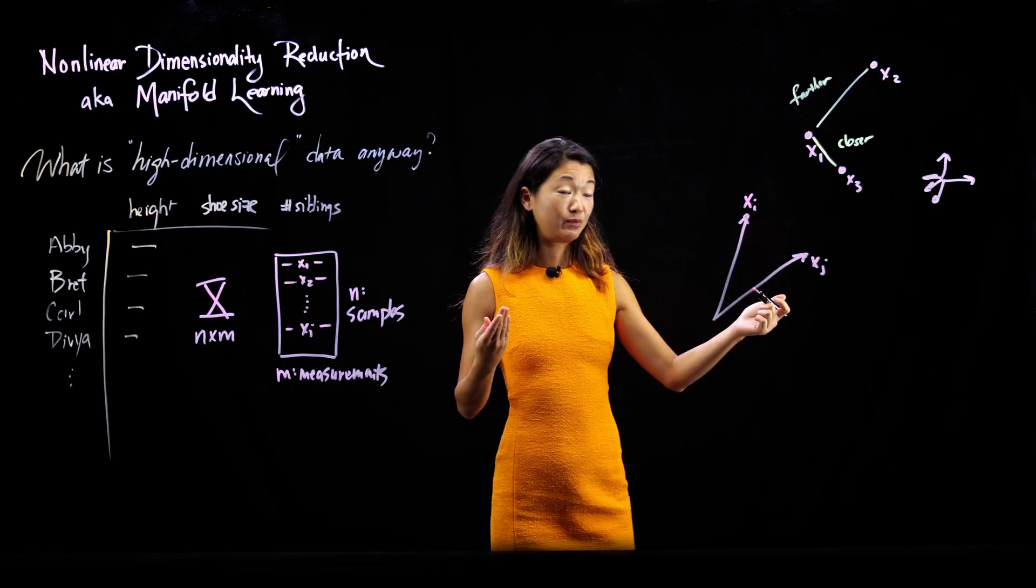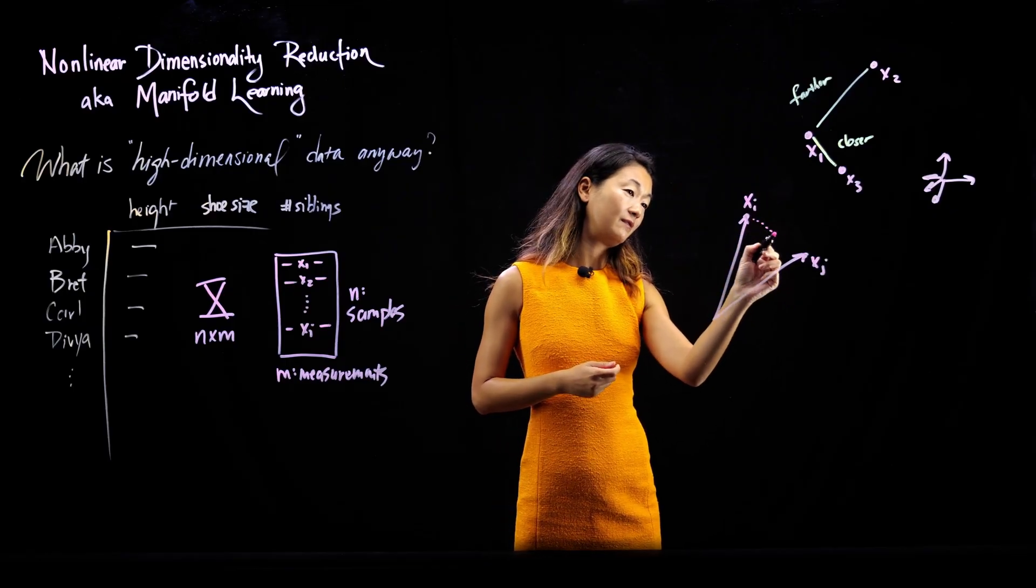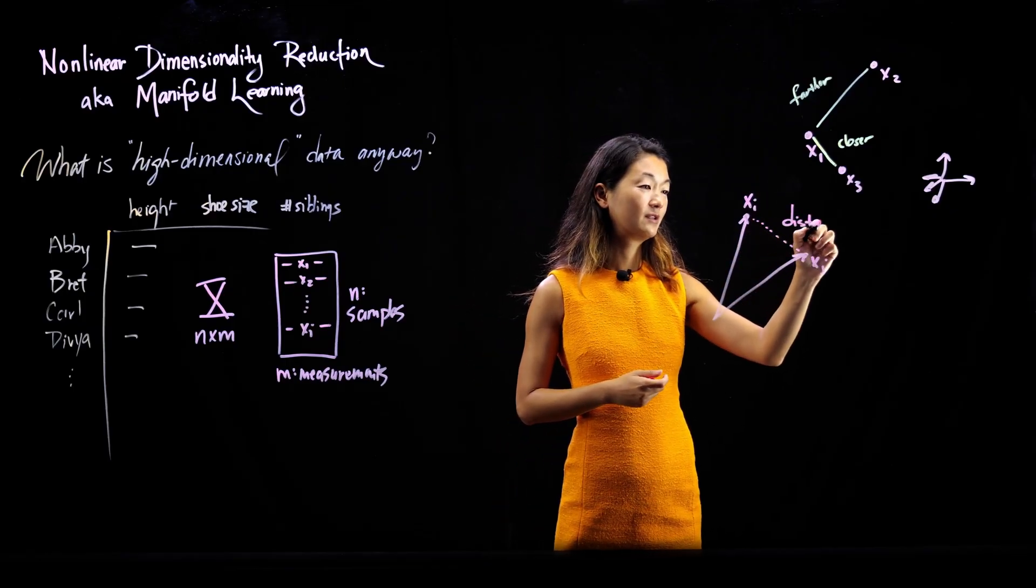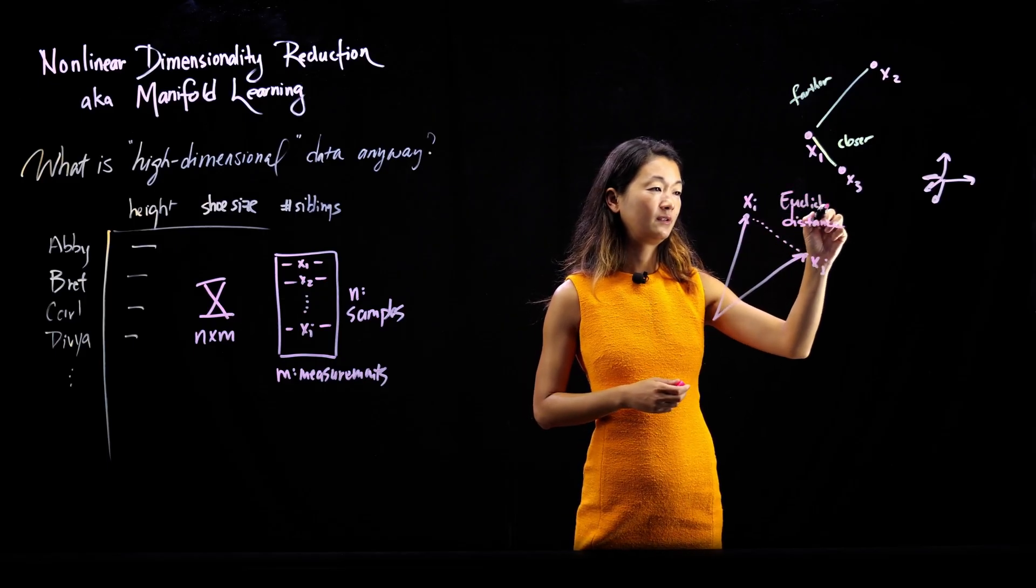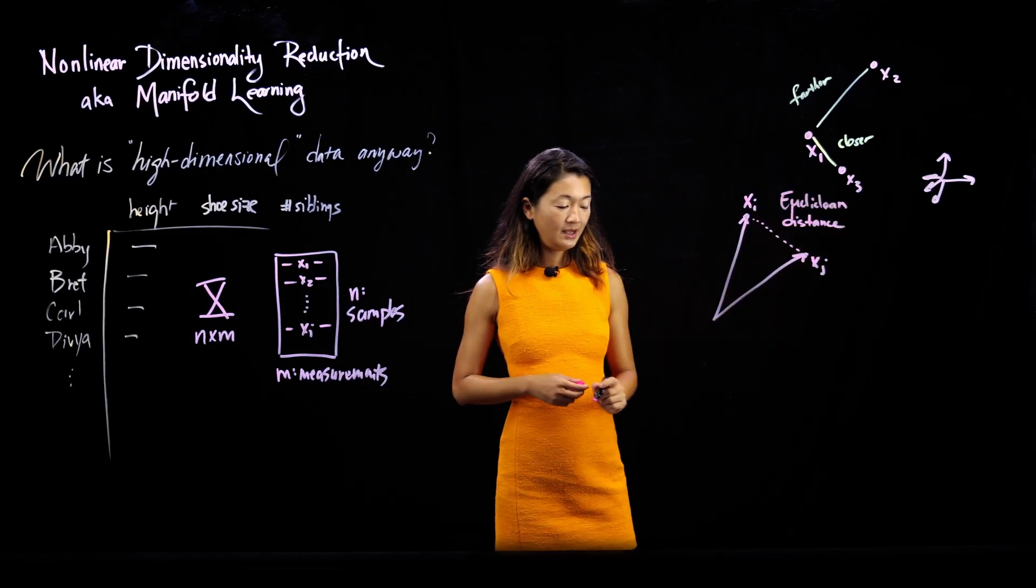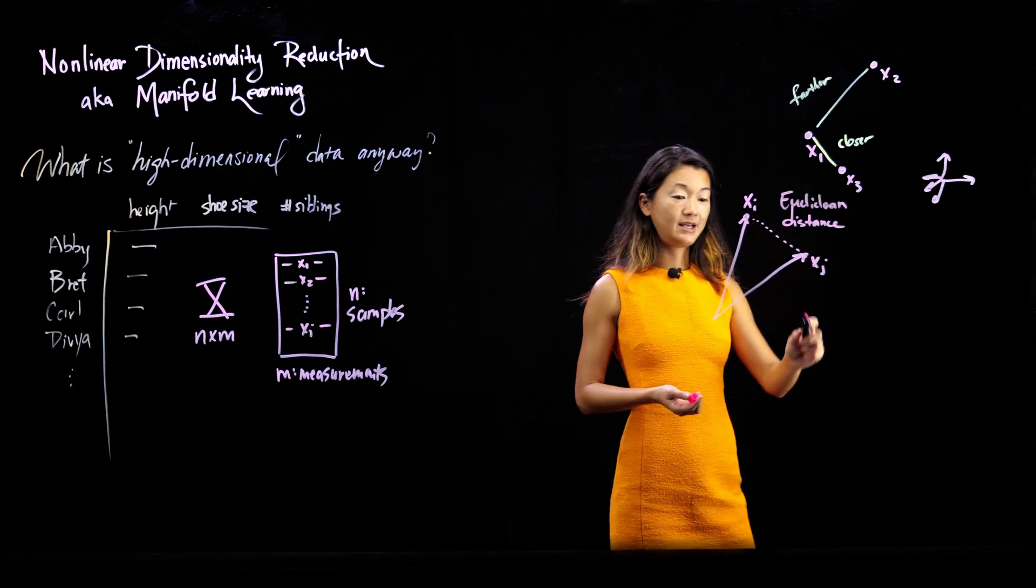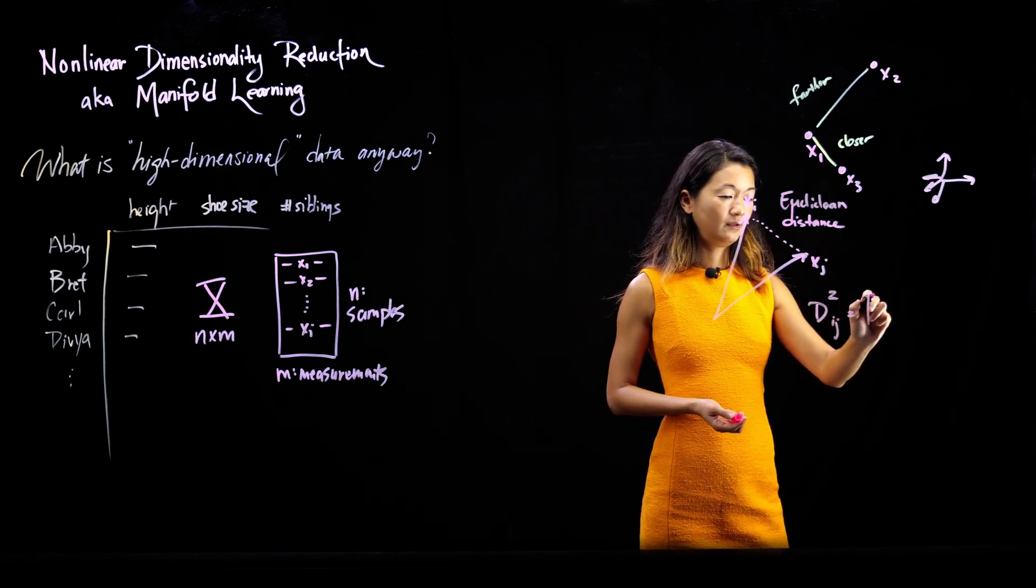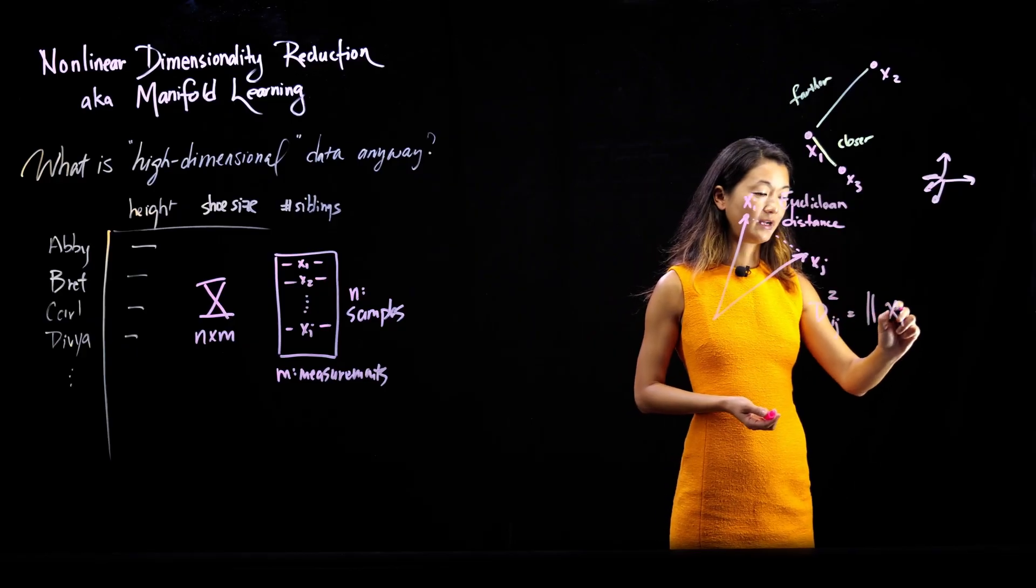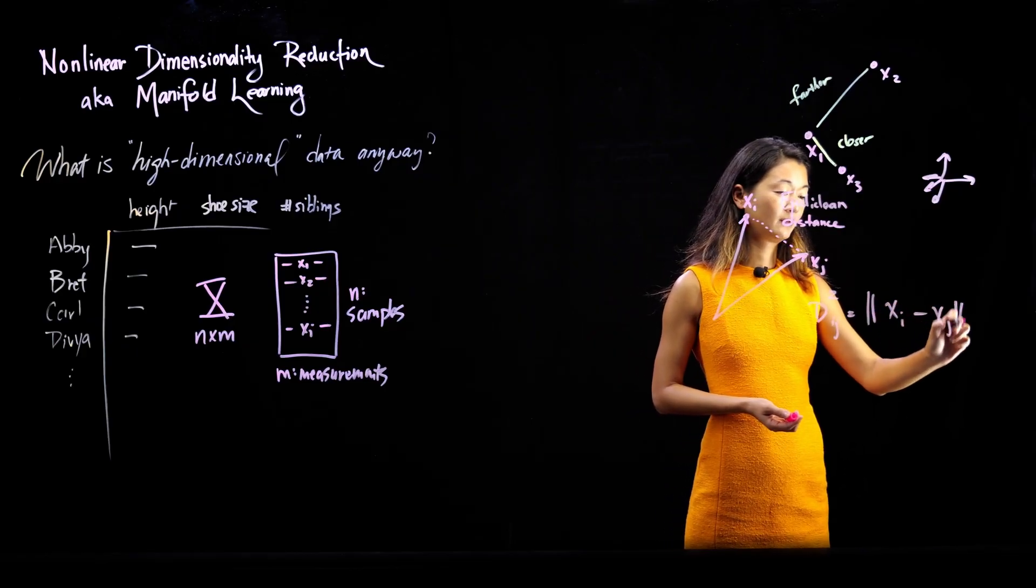And the distance between them is simply the length of this vector. So this is the distance I want. Simplest notion of distance, also called the Euclidean distance. It's just the length of that vector there. And I can compute it by taking the norm of xi minus xj.